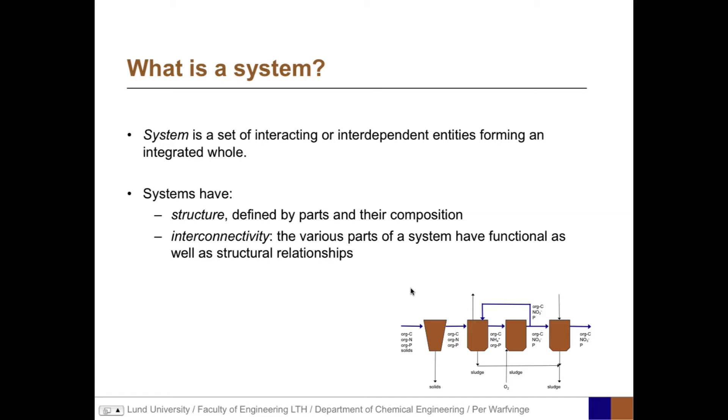We also have interconnectivity. The various parts of a system have functional as well as structural relationships. The pipes connecting the vessels are examples of structural relationships. When it comes to functional relationships, the reactions taking place in one vessel have impact on the reactions in the next vessel.